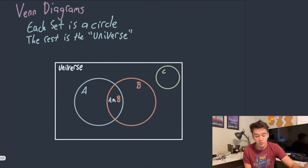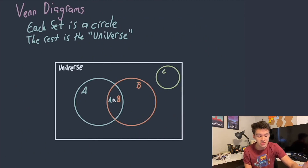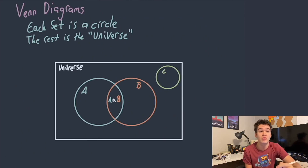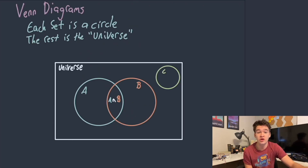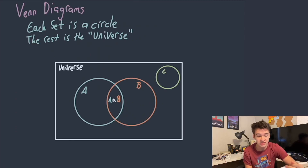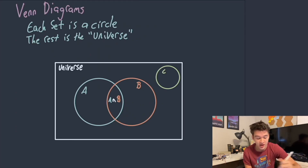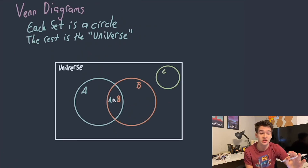One of the most useful ways to represent sets is by using Venn diagrams. This is not going to be used when you're writing out actual set theory, but for visualizing how sets actually work and understanding them, this is a super useful tool. Each set is represented by a circle, and the rest — which you can see is all boxed in — is the universe. Here we have some labels: the first circle is A, the second circle is B, and the third circle is C.